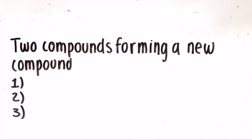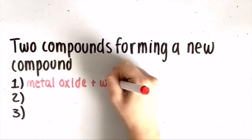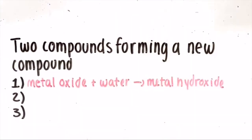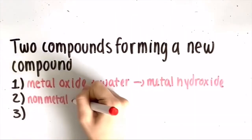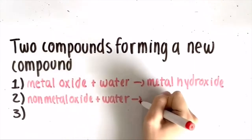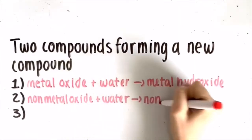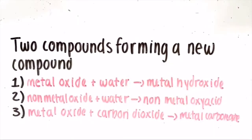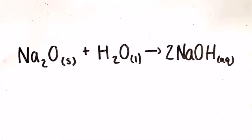Finally, two compounds forming a new compound. There are three different ways that two compounds can form a new compound: a metal oxide plus water yields a metal hydroxide, a non-metal oxide plus water yields a non-metal oxy acid, and a metal oxide plus carbon dioxide yields a metal carbonate.